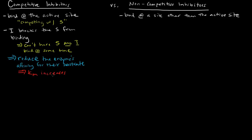When we plot the Lineweaver-Burk plot, which intercepts should we expect to change? The x-intercept will change, because the Km increases. What about Vmax? In the case of a competitive inhibitor, the Vmax does not change.